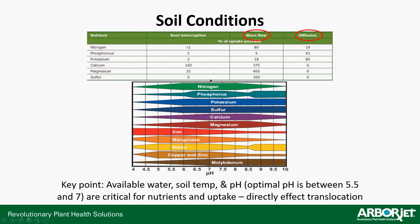Nitrogen, phosphorus, and potassium — all the macronutrients — range from about pH 6 up to 7 or 8. On the other side, micronutrients like iron, manganese, and boron tend to range a little bit lower, around 5.5 to 7. Typically between 5.5 and 7 is where you'll find your best range of pH for overall nutrient availability, which is important because that's how your plant brings in what it needs to stay healthy, which in turn increases your transpiration rates.